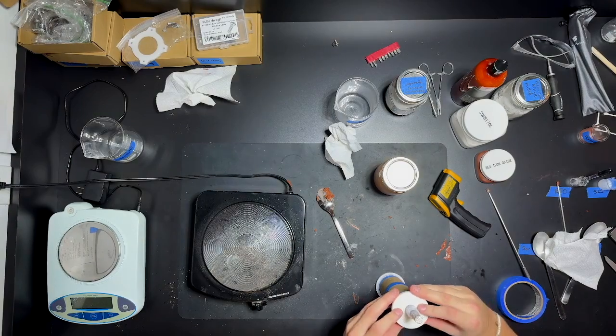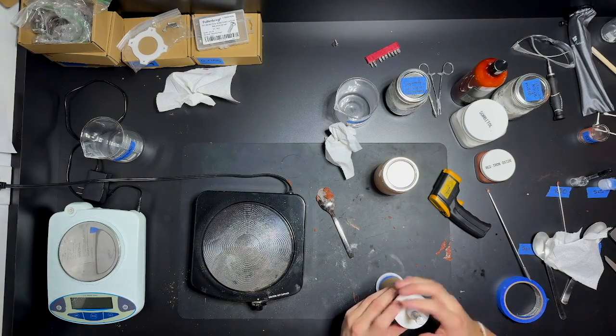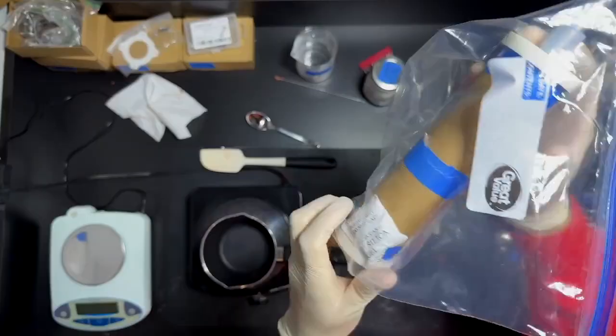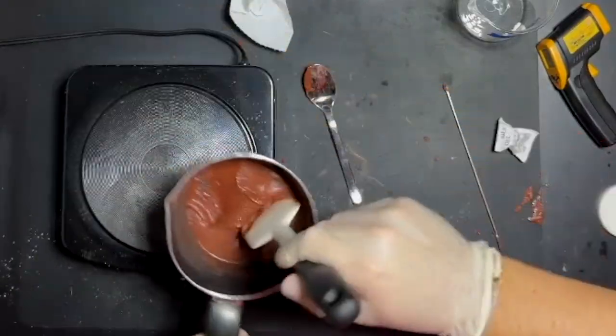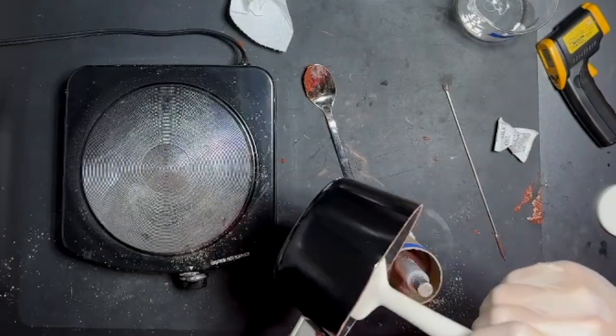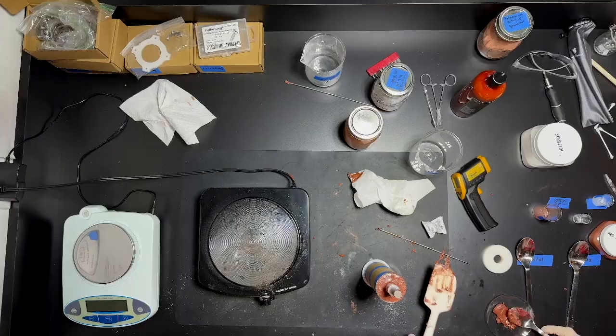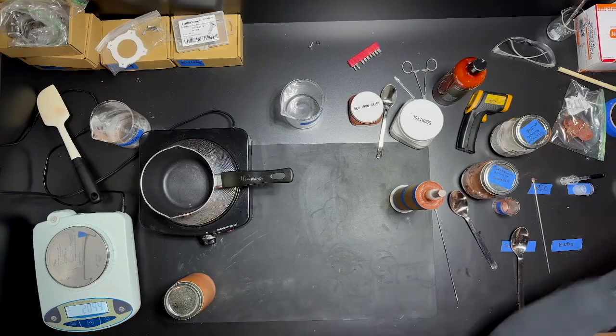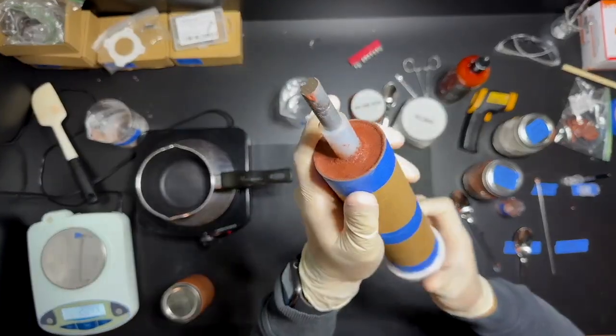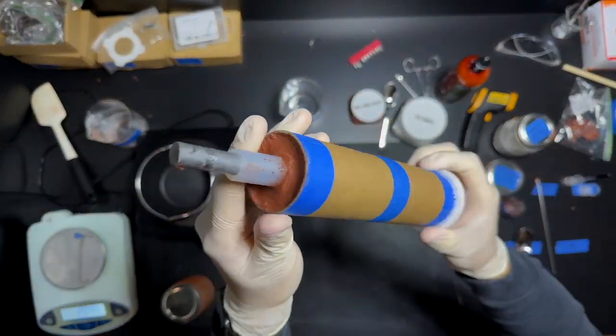Now I put the cap on, tamp it down, and give it another 12 hours to harden. Once again, I measure, mix, and melt the propellant and pour it in on top. Now we are nearly done. I give it at least 48 hours to fully harden before demolding it.